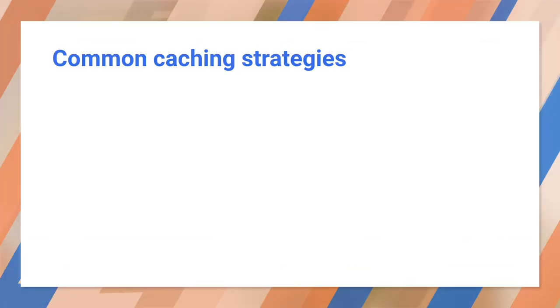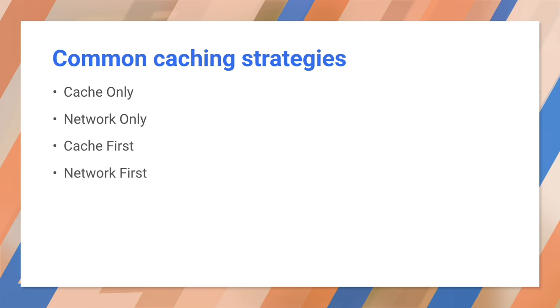When service workers were first introduced, a set of common caching strategies emerged. A caching strategy is a pattern that determines how a service worker generates a response after receiving a fetch event. In this video, I'll take you through some examples and at the end show you how to use Workbox to implement these strategies really easily.